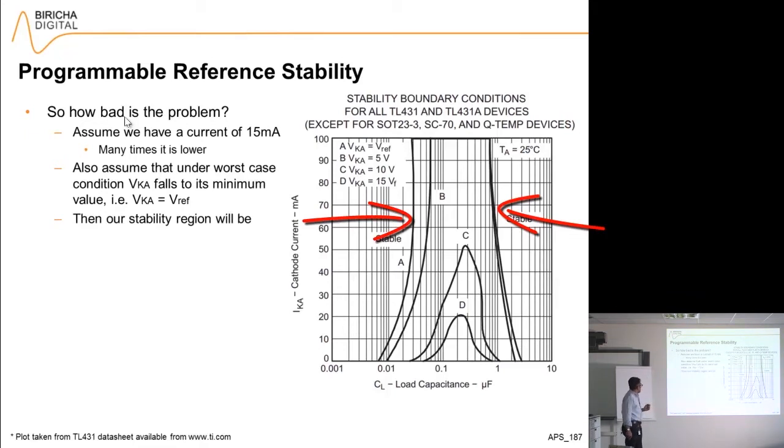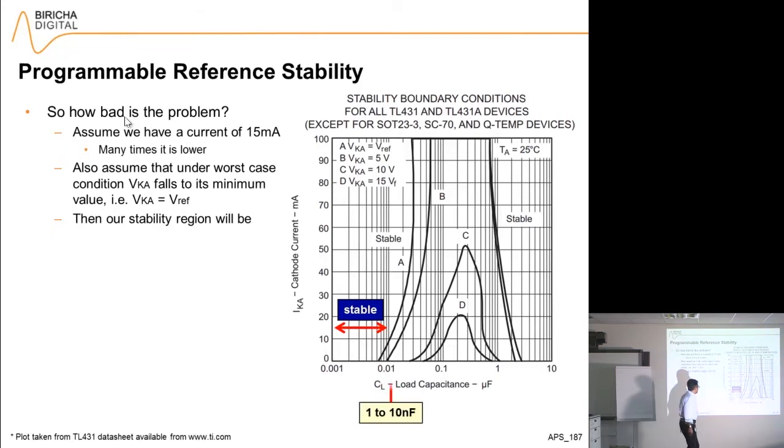Now, curve A, let's see what the limits are. Our stability region will be from here to here. This is the capacitance of the load in microfarads, effectively from 1 to 10 nanofarads. Then from 10 nanofarads to 2 microfarads it will be unstable, and then bigger than 2 microfarads it will be stable again.